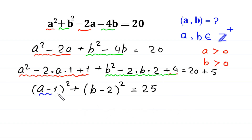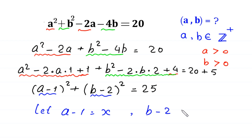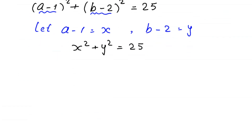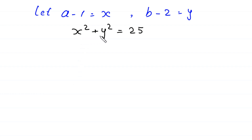Now, suppose that a minus 1 is equal to x and b minus 2 is equal to y. Substituting x and y into the equation, it becomes x squared plus y squared is equal to 25. We have a sum of two squares on the left-hand side that should equal 25.